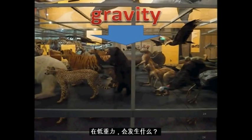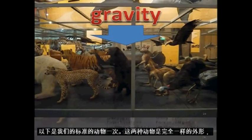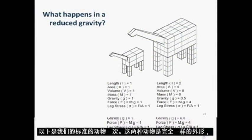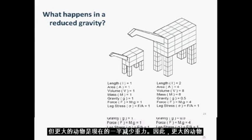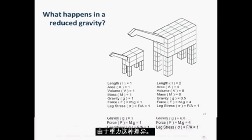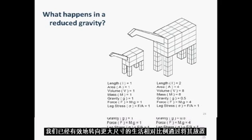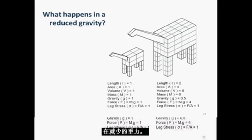But what happens in a reduced gravity? Here are our standard animals once again. The two animals are exactly the same shape, and the larger one is twice the linear scale of the smaller animal. But the larger animal is now in a reduced gravity of one half, so it would only be four times as heavy as the smaller one. Both animals have the same leg stress because of this difference in gravity. We have effectively shifted the relative scale of life towards a larger size by placing it in a reduced gravity.